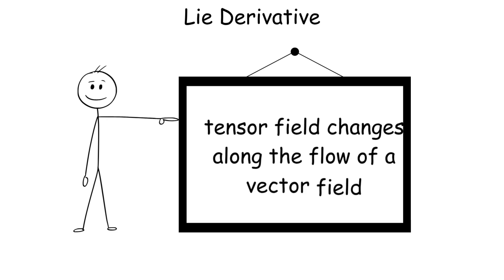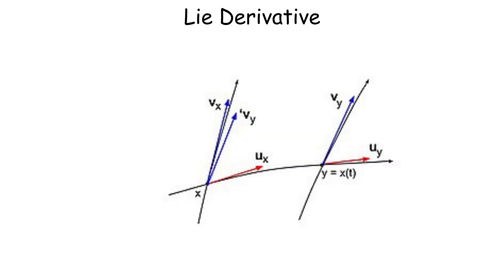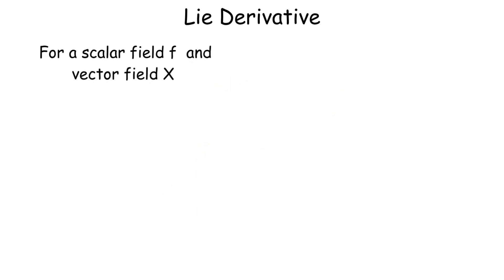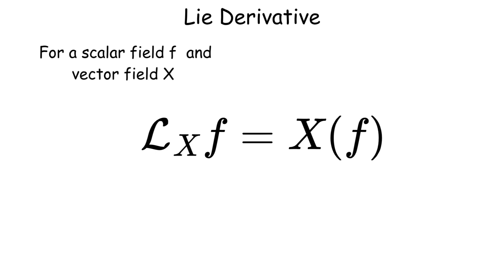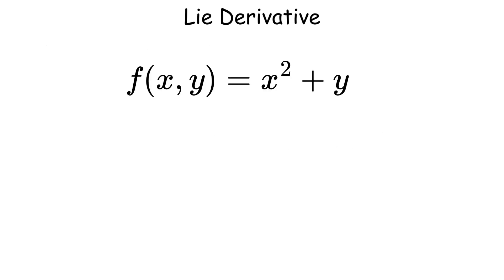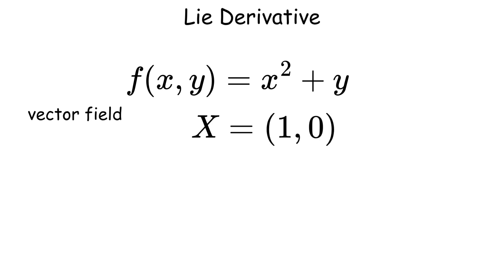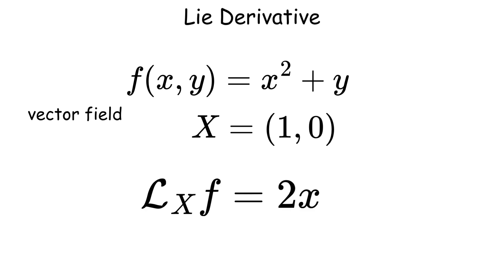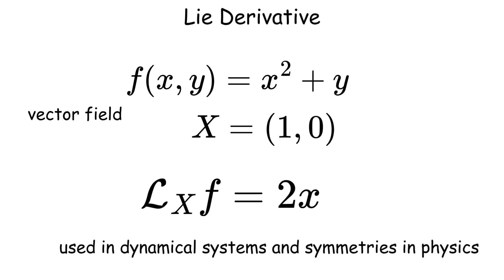The Lie derivative quantifies how a tensor field changes along the flow of a vector field, preserving the manifold structure. For a scalar field f and vector field X, it is L sub X f equals X of f. For example, for f of x and y equals x squared plus y and vector field X equals (1, 0), the Lie derivative equals 2x, showing the change along the flow. This is used in dynamical systems and symmetries in physics.